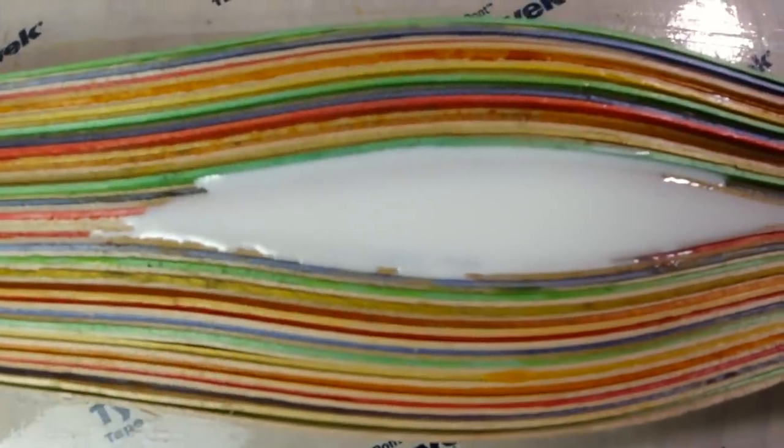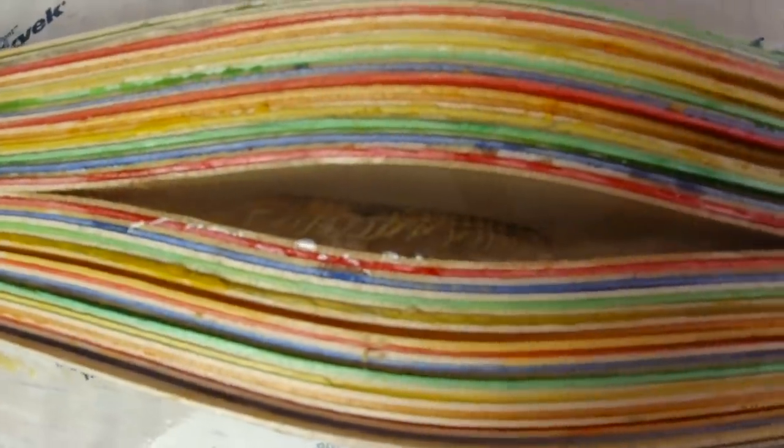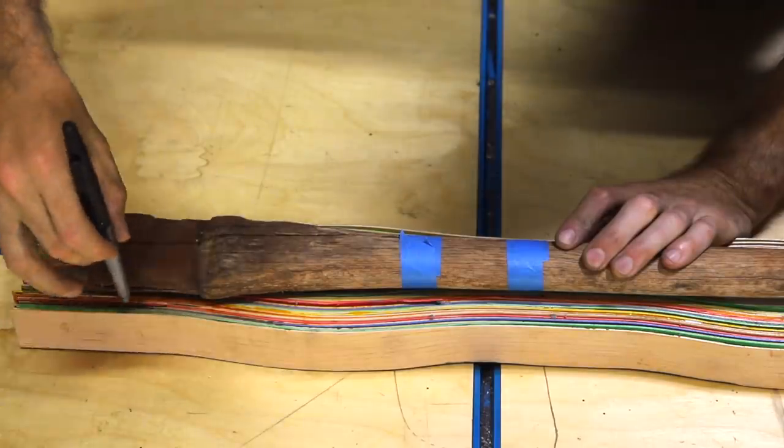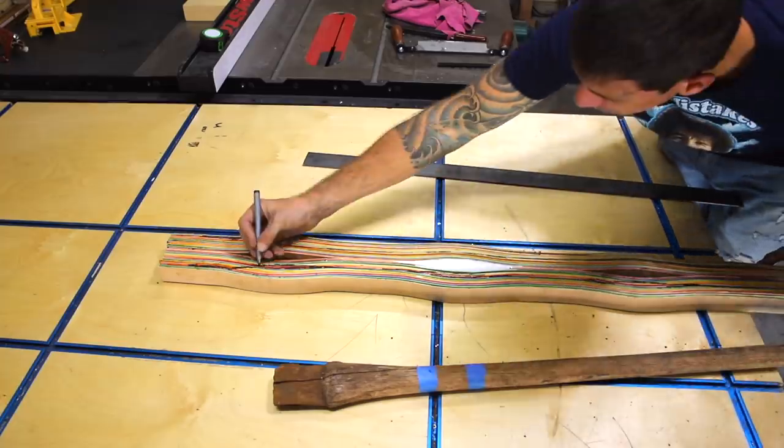An hour later, I added a few more layers of epoxy on top of the centipedes to cover them up completely. I let the epoxy cure for an entire day and used the old axe handle to transfer the shape before cutting it out on the bandsaw.